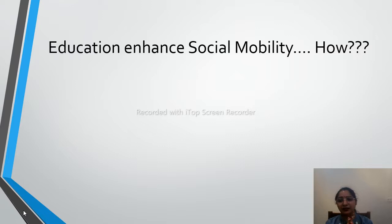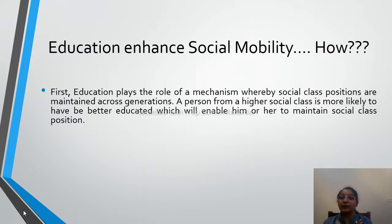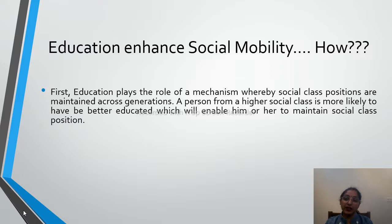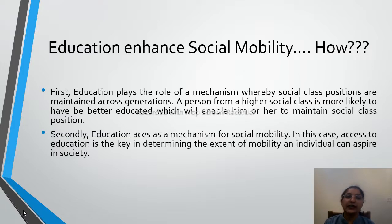Education plays the role of a mechanism whereby social class positions are maintained across generations. A person who was highly educated in their time provided higher education to their children as technology and study patterns evolved. Generation to generation, educated persons grew, and their status in society was maintained and even increased. This is how education maintains social class across generations.